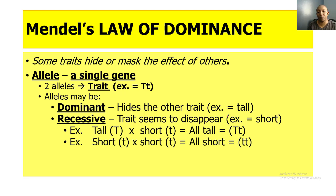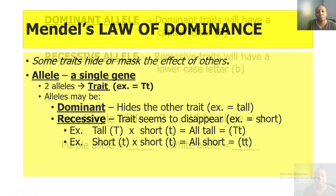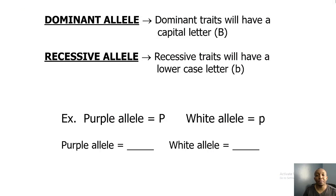Then we have recessive traits, where the trait seems to disappear. For example, short — the only way a recessive trait shows is if there is no dominant trait present. If you have two lowercase t's, that recessive trait shows and the individual would be short. In our first example, a capital T crossed with a lowercase t means all individuals are tall, because the capital T hides the lowercase t. In our second example, lowercase t crossed with lowercase t means all individuals are short.